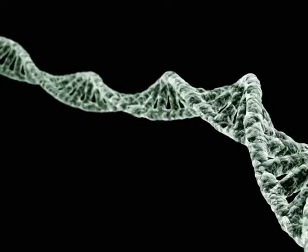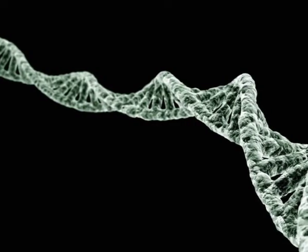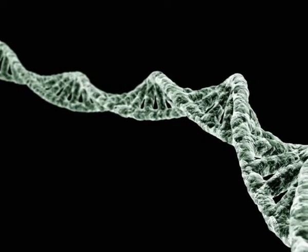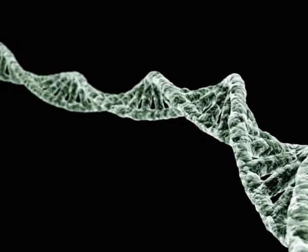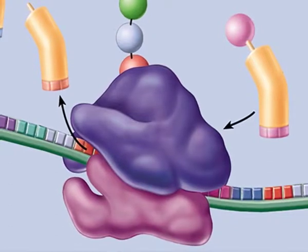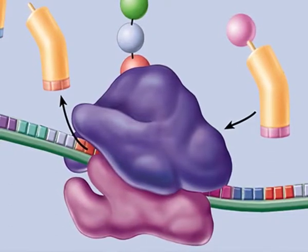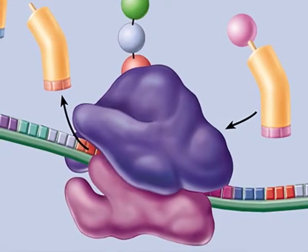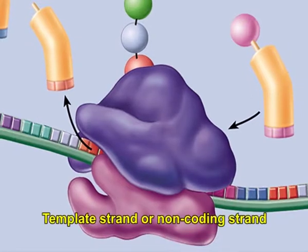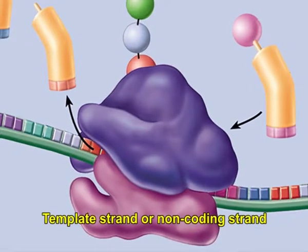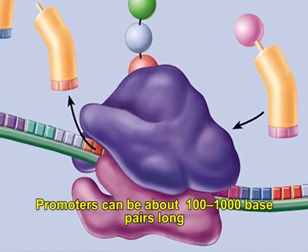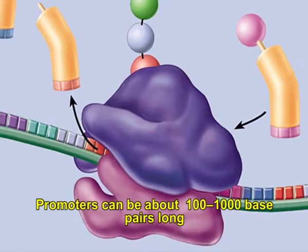In genetics, a promoter is a region of DNA that starts transcription of a specific gene. Promoters are situated close to the genes they transcribe, upstream of the template strand or non-coding strand. Promoters can be about 100 to 1,000 base pairs long.